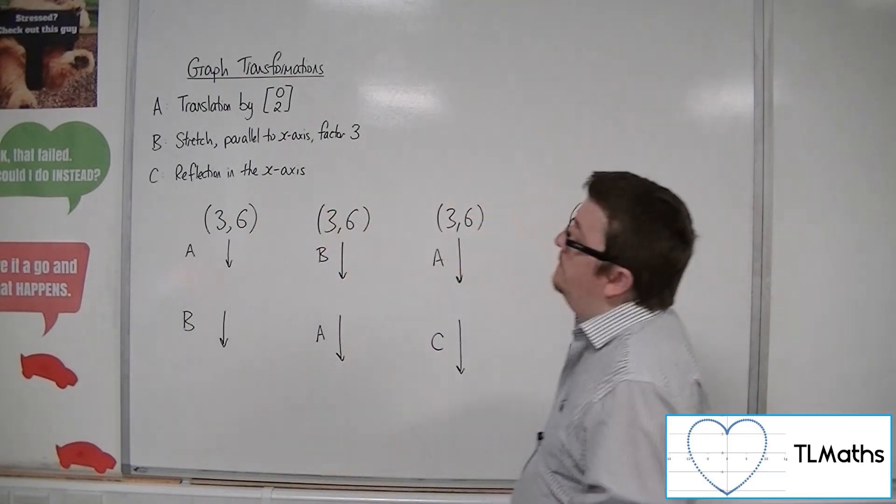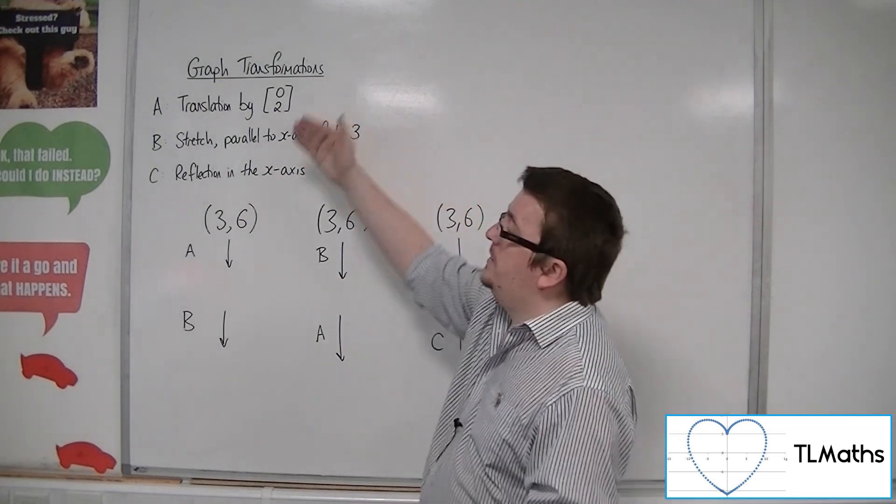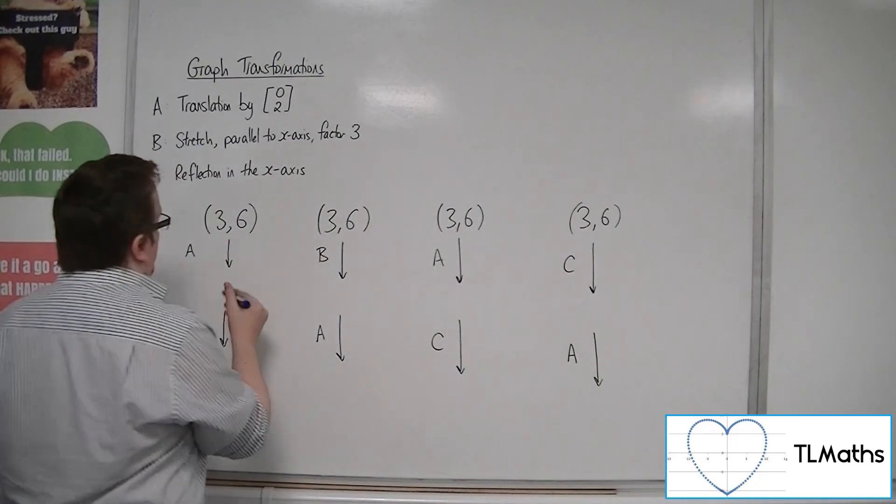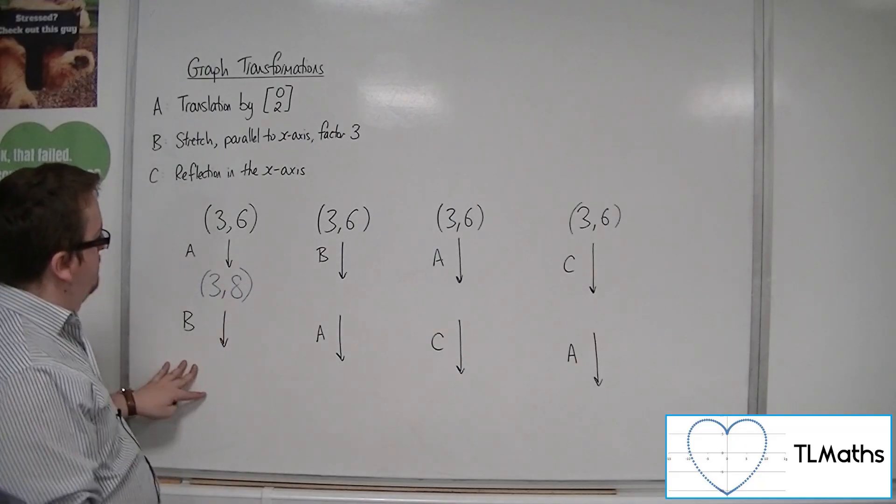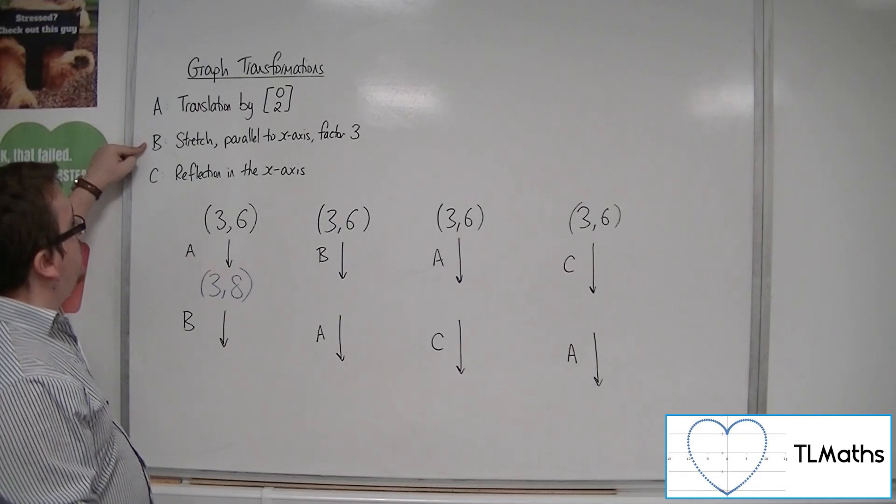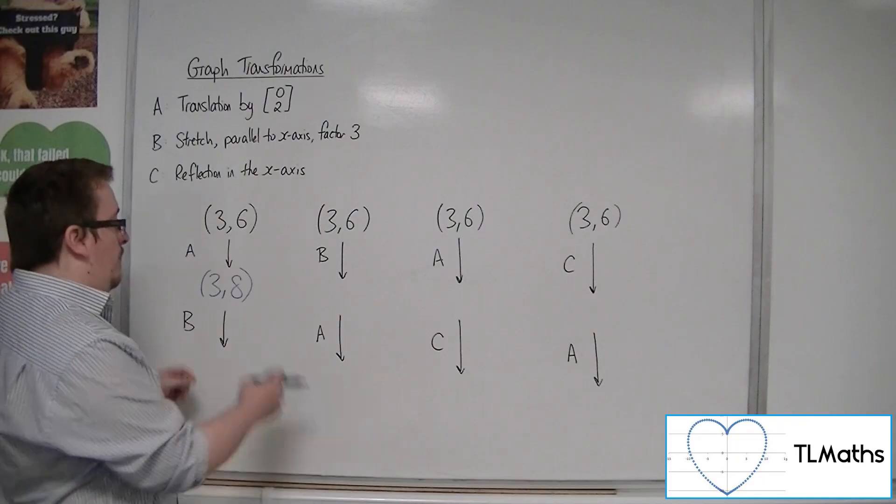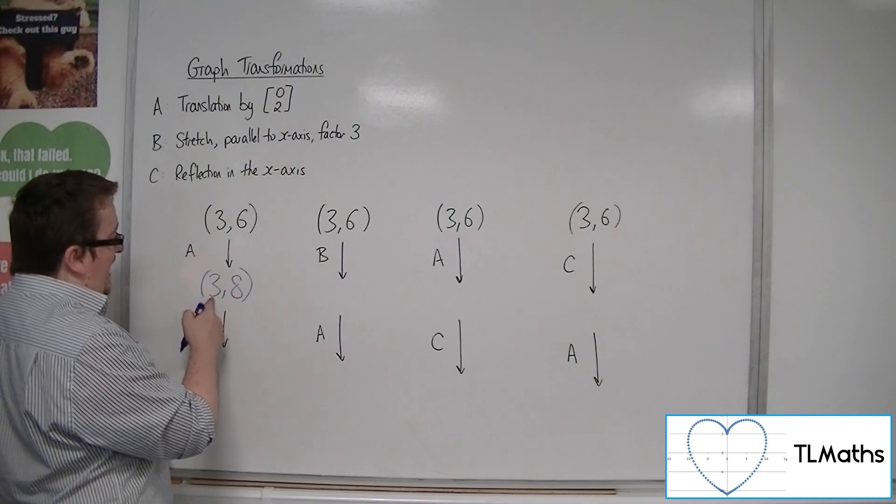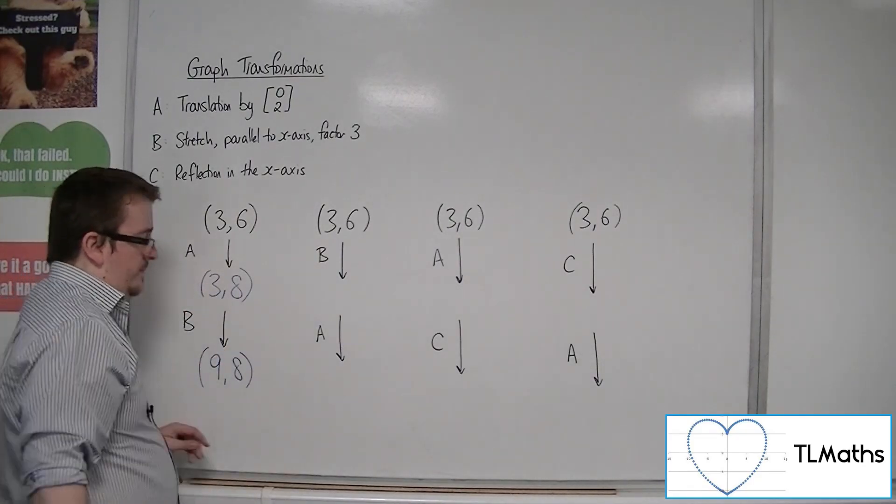So, transformation A is going to translate the point by the vector (0, 2). So, it's going to move it up two units. So, the new coordinates will be (3, 8). Then, if I use transformation B, stretch parallel to the x-axis factor 3, then that point will stretch outward by factor 3. And so, its x-coordinate will be multiplied by 3, and we'll get (9, 8).